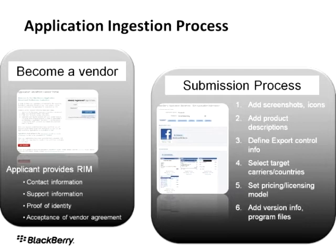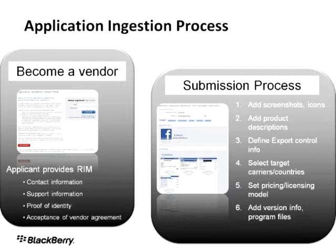Once you're approved as a vendor in BlackBerry App World, the next step is to take your application or your theme and submit it to have it made available. The submission process is also very easy. It's a wizard-driven site that guides you through easy step-by-step processes where you add product information or theme information such as imagery and icons showing how your product will appear in BlackBerry App World. You add descriptions that tell BlackBerry users about your products. You can also target your theme or application, choosing which users, carriers, BlackBerry operating system, or device will actually see the theme. You set the pricing model, then add version information and program files, and click publish.